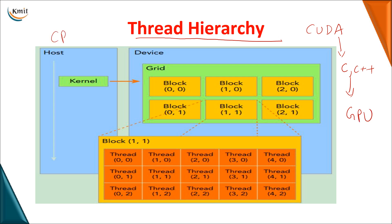As we know, the CPU is called the host and the GPU is called the device. Whenever you have a kernel function to be executed by the GPU, it hands over control to the GPU. Internally you have multiple blocks, and the collection of these blocks is called a grid. Each block contains multiple threads. This is the internal software view of your CUDA, and now we'll see how to use them in programming constructs.